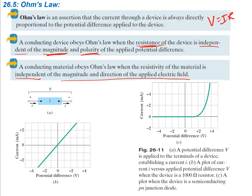Looking at graphs: when a potential difference V is applied to a 1,000-ohm resistor, a plot of current I versus applied potential difference V gives a straight line. As we increase the potential difference in the positive direction, current increases linearly; as it goes negative, current goes negative linearly. This type of resistor follows Ohm's Law.